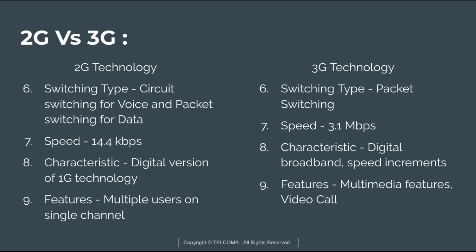The next point is switching type. In 2G technology, circuit switching is used for voice and packet switching is used for data services. Whereas in 3G technology the switching type is only packet switching — meaning for both voice and data, only packet switching is used.